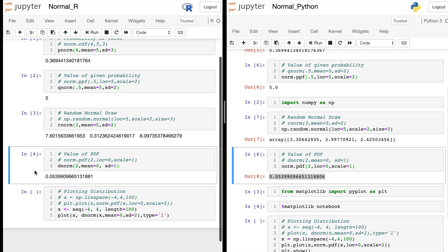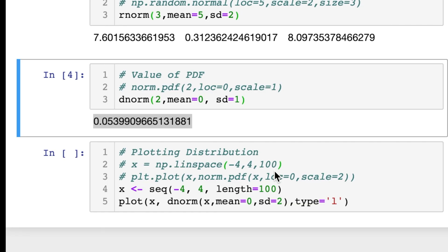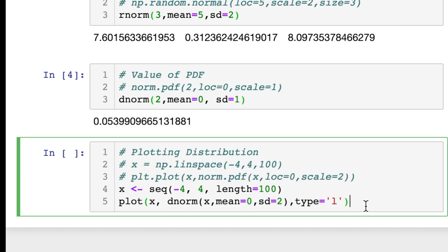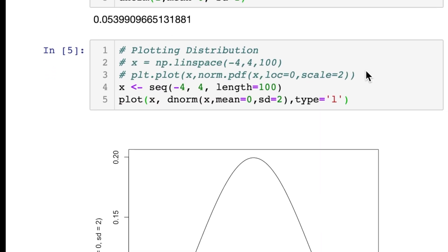And of course, the PDF in both of these cases is mostly useful for plotting the normal distribution. So in R over here, we're going to plot the normal distribution. Let's go ahead and run that. This is what it's going to look like.